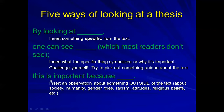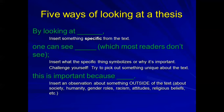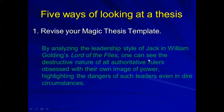Challenge yourself to pick out something unique about the text for the 'one can see' section. Then 'this is important because' is where you really push yourself — insert an observation about something outside of the text: something about society, humanity, gender roles, racism, religious beliefs, whatever. Think about what the book reveals about something outside the text and what intriguing or thought-provoking idea you can tie in. The magic thesis template forces you to think at three different levels.